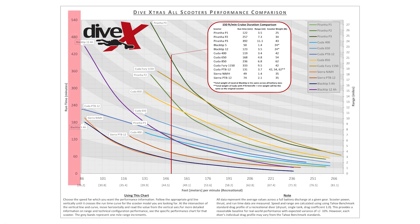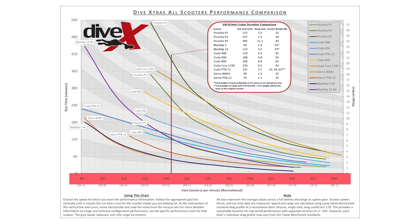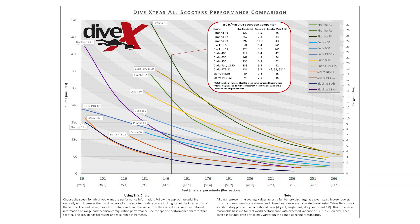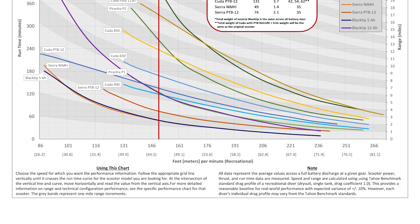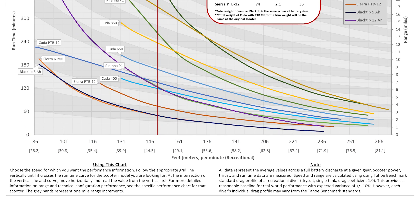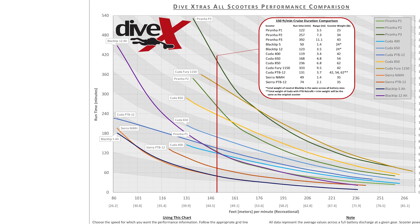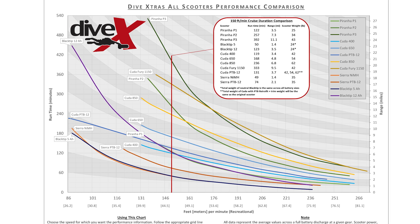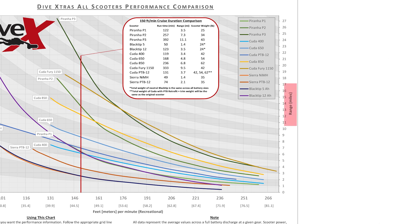The first thing we'll look at is the measurement values along the sides and bottom of the graph. The bottom row of digits represents the speed of the scooter shown in feet-per-minute. Along the left-hand side of the chart is the runtime measurements — how long the scooter will operate at a given speed. On the right-hand side is distance, measured in miles.